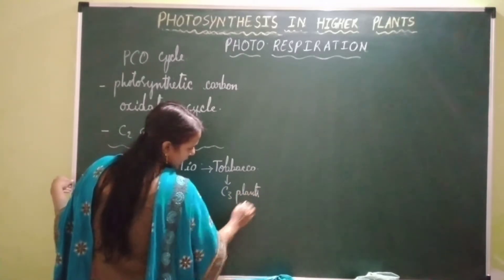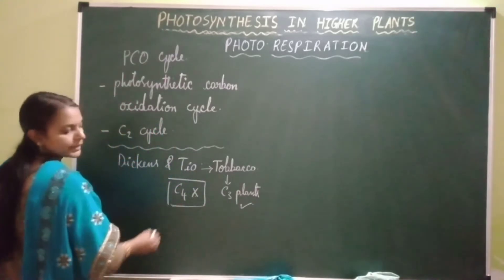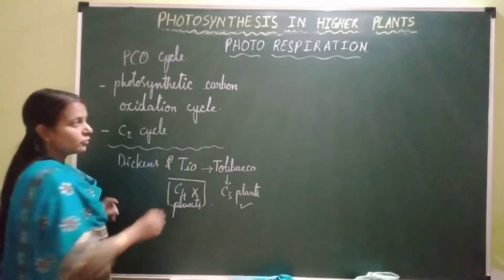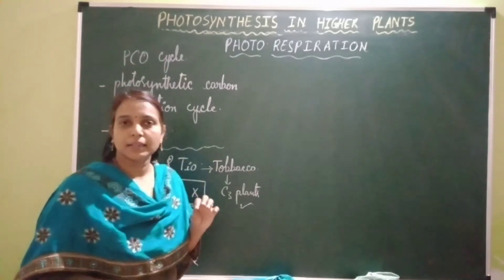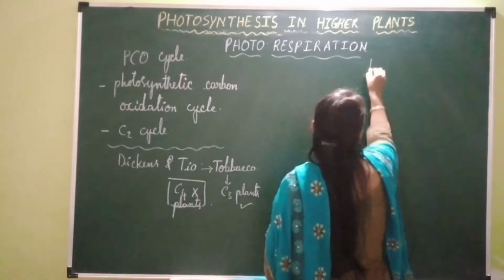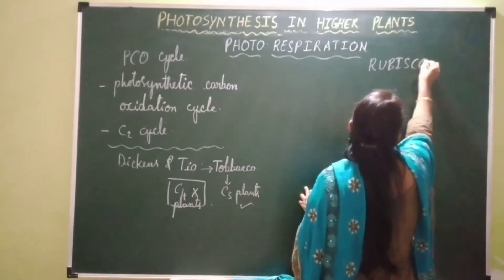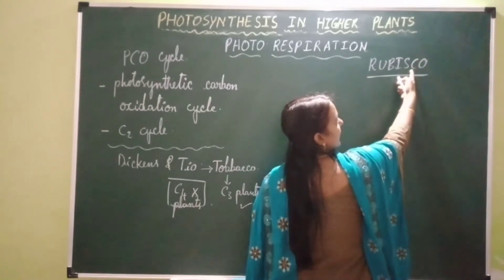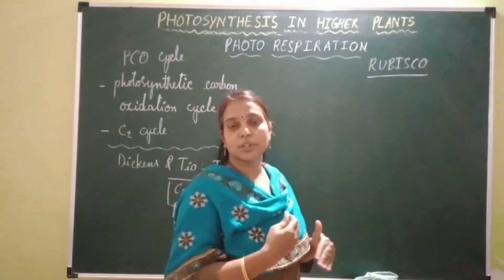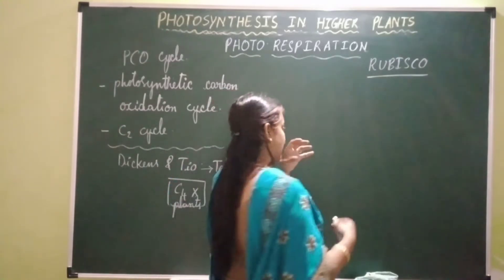This pathway occurs in C3 plants only and is completely absent in C4 plants. Before starting with the details of this pathway, let's study the details of an enzyme — Rubisco. Rubisco enzyme is RuBP carboxylase oxygenase, meaning it functions as both carboxylase and oxygenase.